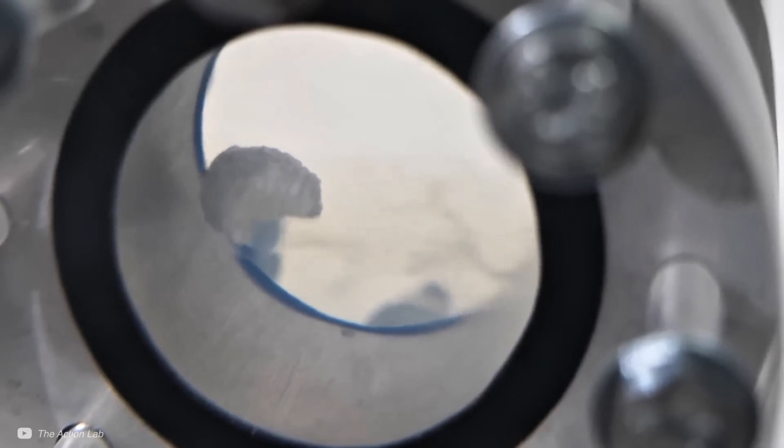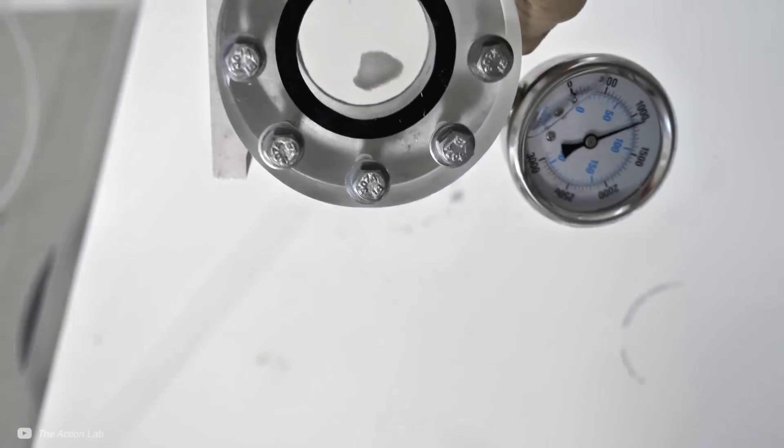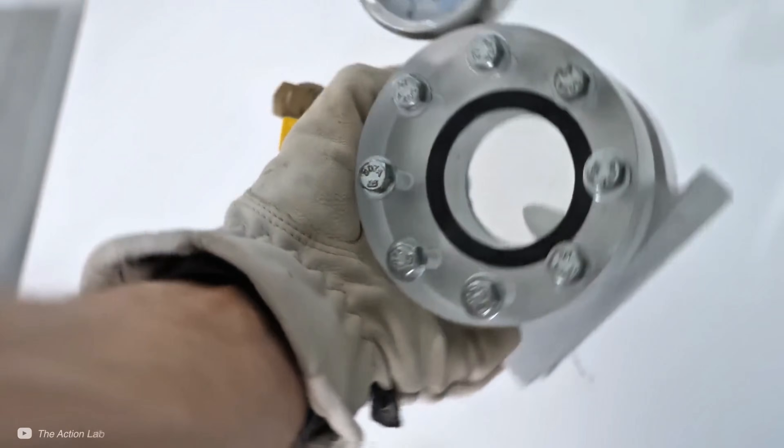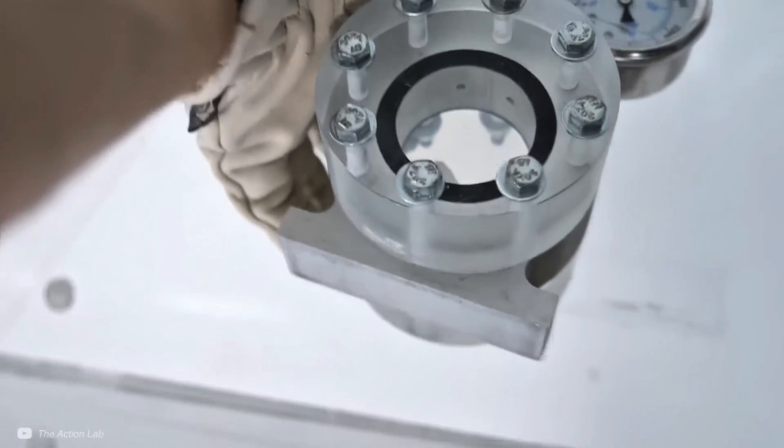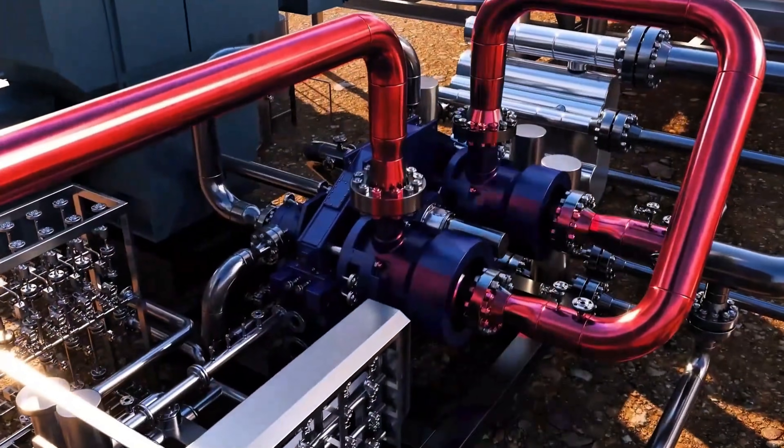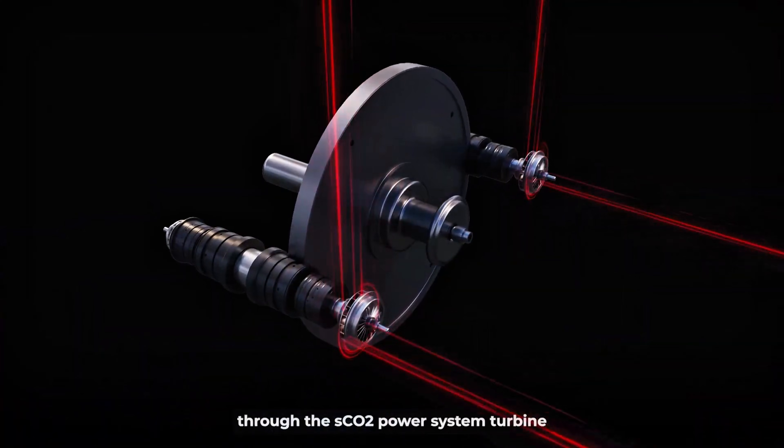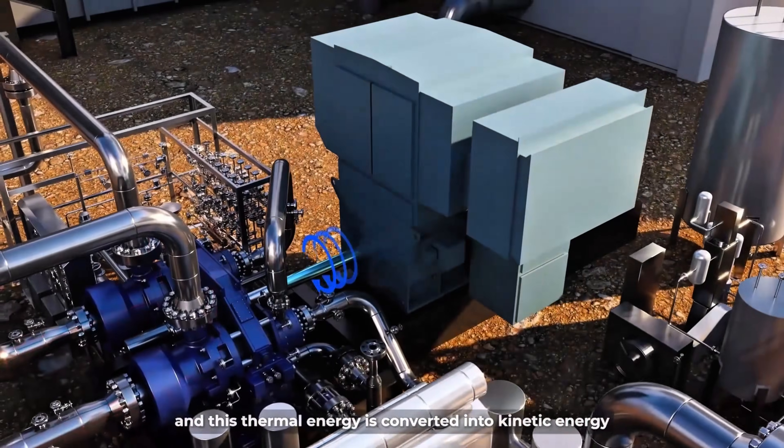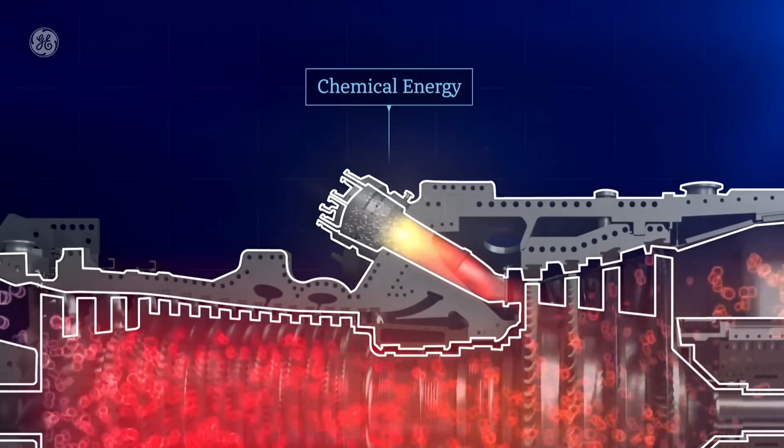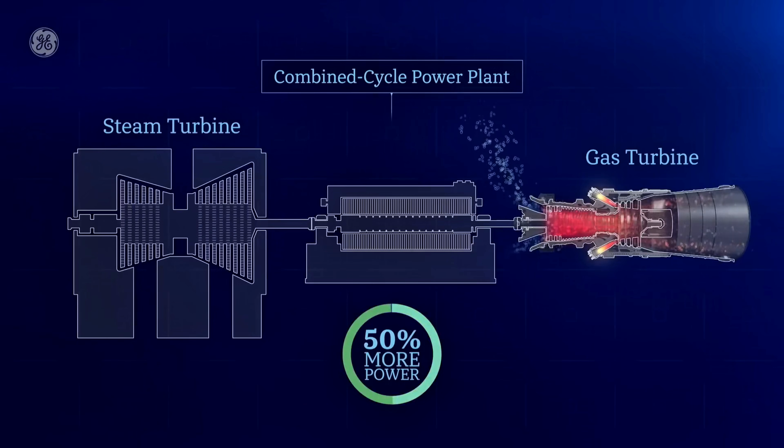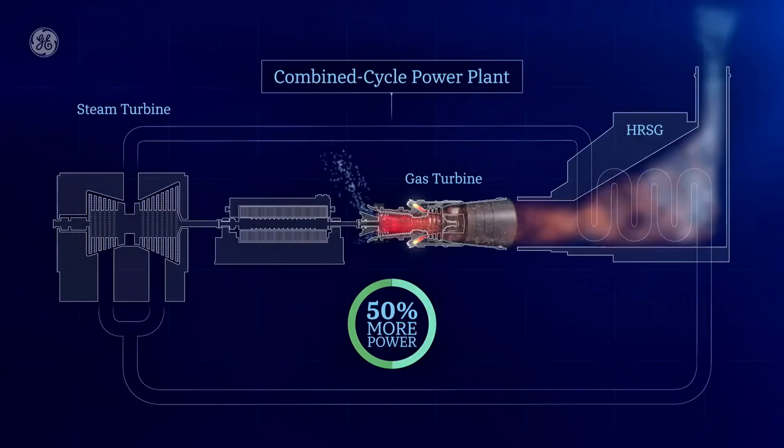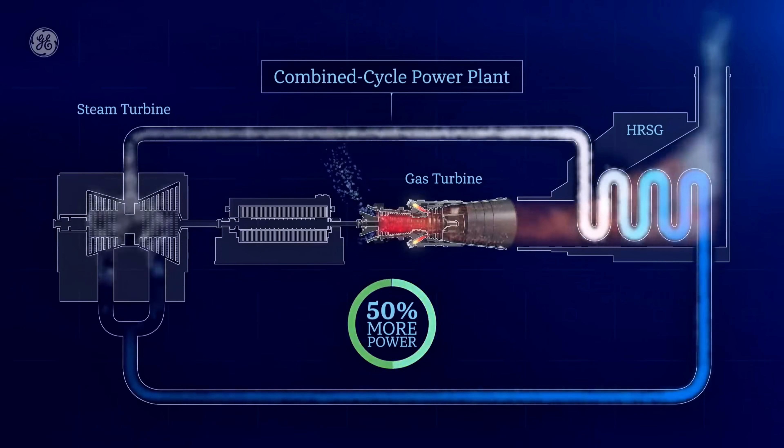The CO2 isn't burned or released. It stays contained in pipes and machinery. A compressor keeps it at high pressure, and any small leaks are simply topped off. Essentially, the same carbon dioxide does all the work over and over. It's like filling a pump with water once and letting it run indefinitely. So when we say using CO2 as a fluid, we aren't burning CO2 as fuel, we're just letting it work inside a sealed turbine cycle.